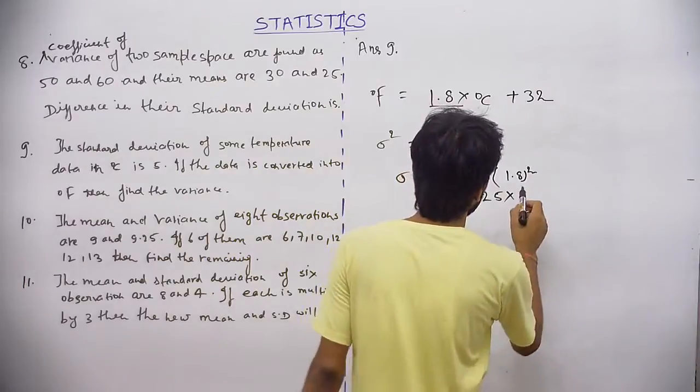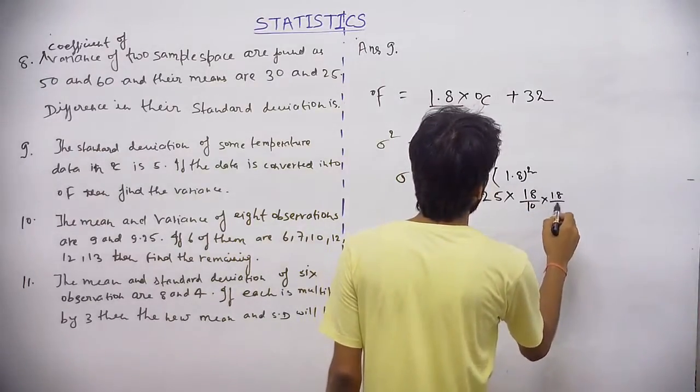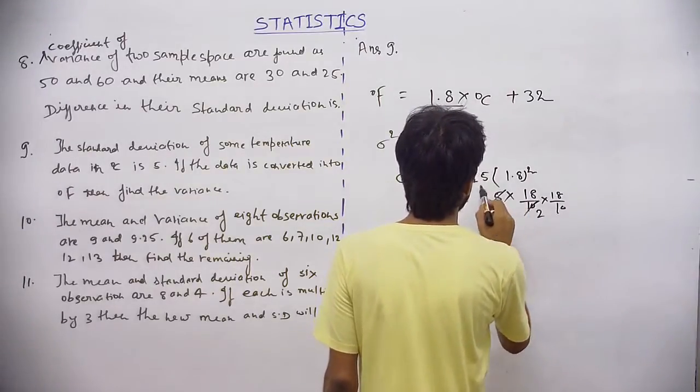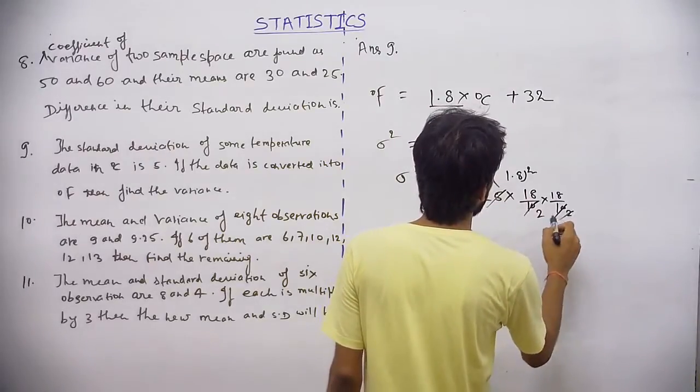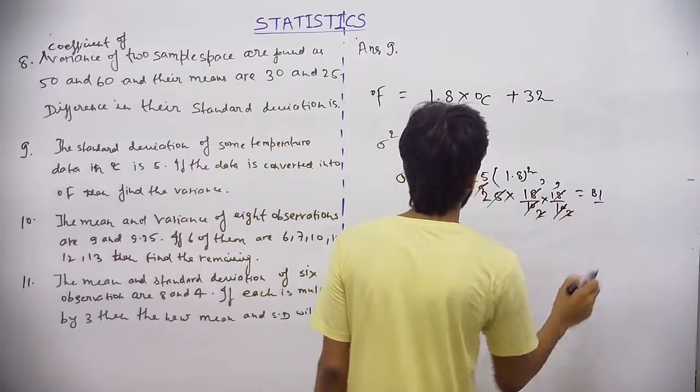You can find it - it means 18 by 10 into 18 by 10 into 25. So 5 into 5, it is 81.